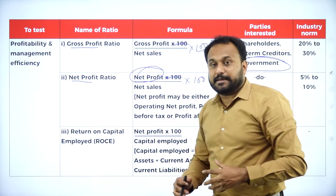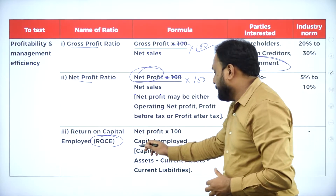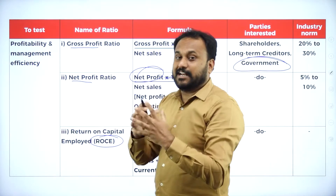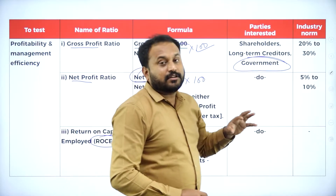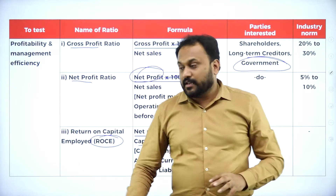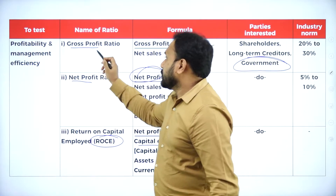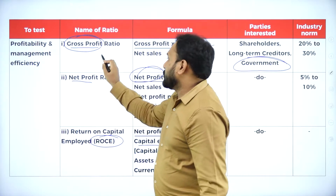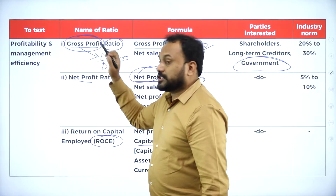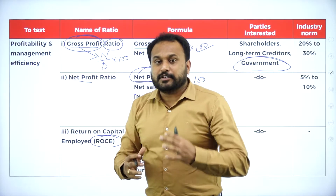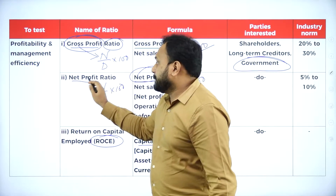Next is return on capital employed — net profit into 100 divided by capital employed. There is no industrial norm for return on capital employed. Please memorize the formulas. Using the numerator-denominator combination: gross profit goes in the numerator, net sales in the denominator, into 100. For net profit ratio, net profit is the numerator and net sales is the denominator.